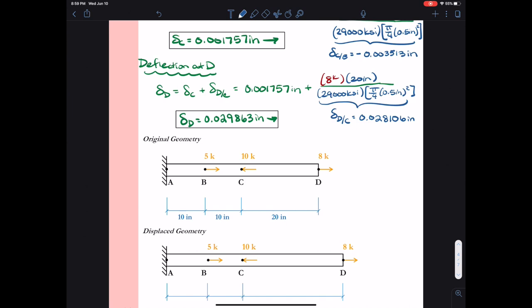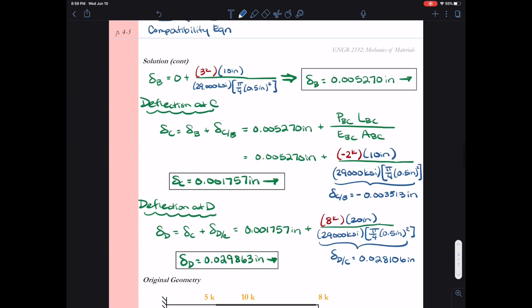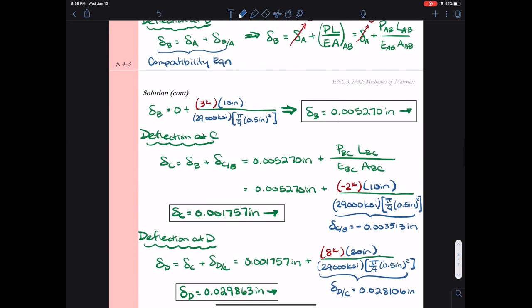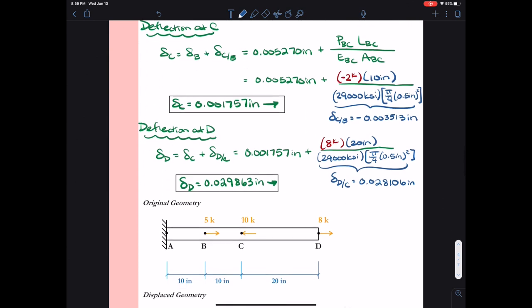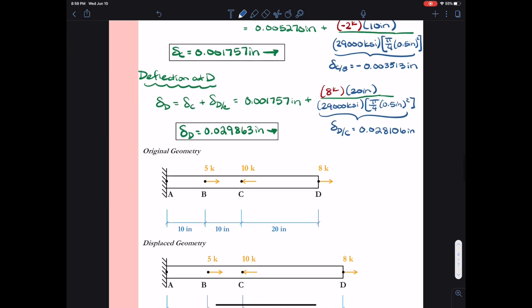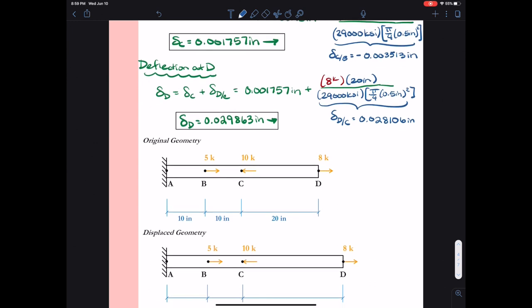So I just want to make sure we have the difference between something like delta C relative to B versus what delta C is. So one is just the elongation or movement relative to another point of one segment. Whereas the other is like a final change from the original spot. So we saw that for delta B relative to A, the value we calculated was 0.005270 inches. So that means in our displaced geometry, segment AB is now 10 inches plus that change. So it's now 10.005270 inches. Likewise, for segment BC, we take 10 inches and we now subtract 0.003513 inches.